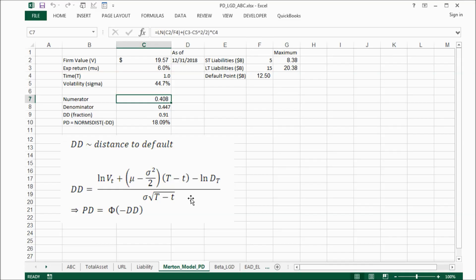This is the formula to calculate the distance to default. The numerator is calculated by the firm value, expect return, time, volatility, and also default point. And then the denominator is decided by the volatility and the time. After we calculated the numerator and the denominator, we got this distance to default. And then assuming this distribution is a normal distribution, we will calculate probability of default according to this distance to default. In this example, we got 18.09%.